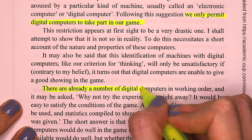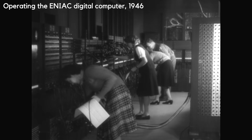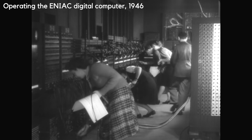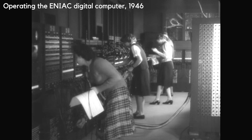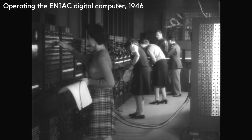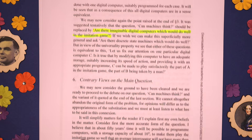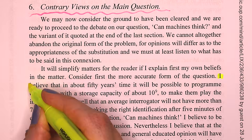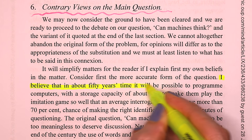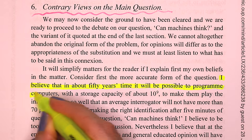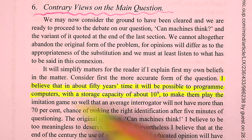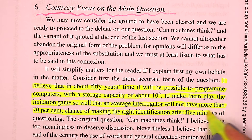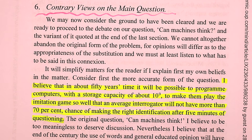He says there are already a number of digital computers in working order, though in 1950 they looked nothing like what we know today. He's not asking whether computers available at present would do well, but whether there are imaginable computers that would. Turing shares his own opinion: he believes that in about 50 years' time — around the year 2000 — it would be possible to program computers to play the imitation game so well that an average interrogator would not have more than a 70% chance of making the correct identification after five minutes of questioning.